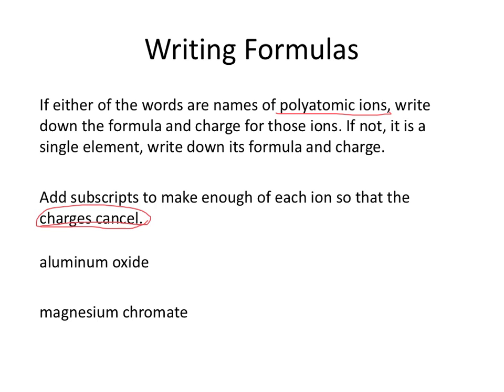Let's start with aluminum oxide. Aluminum, Al, is plus 3 — because it's always plus 3, that's something you have to memorize. Oxide, since it ends in -ide, is just the element oxygen, and it's minus 2 because it's from group 16. That means I'm going to need two of the Al³⁺ and three of the O²⁻ in order to get the charges to cancel. So that'll be Al₂O₃.